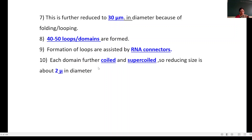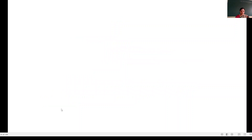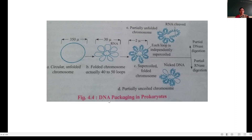Each domain is further coiled and super-coiled, reducing the size to about 2 microns in diameter. This coiling is assisted by positively charged HU — that is, histone-like DNA binding protein — and enzymes like DNA gyrase and DNA topoisomerase. See the diagrammatic representation of DNA packaging in prokaryotes: the nucleoid is reduced and a circular unfolded chromosome is formed, about 350 microns.